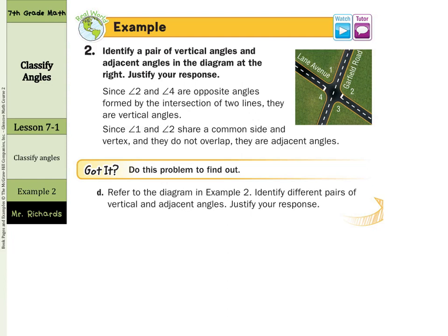Identify a pair of vertical angles and adjacent angles in the diagram, and justify your response. Since angle 2 and angle 4 are opposite angles formed by the intersection of two lines, they are vertical angles. Since angle 1 and 2 share a common side and vertex and do not overlap, they are adjacent angles.